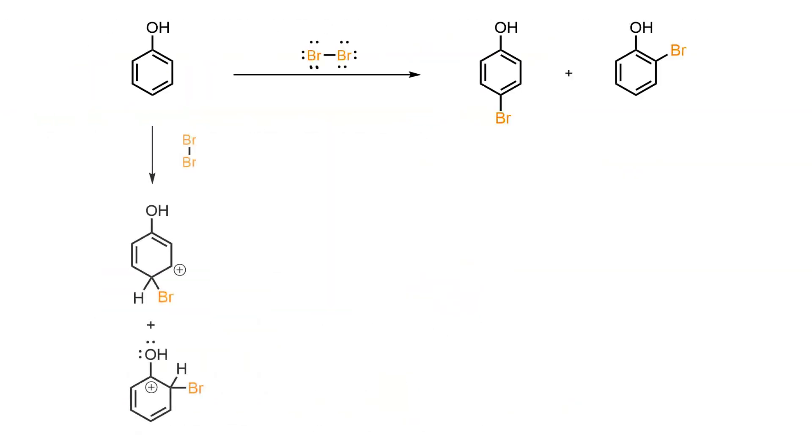Because the phenol is so activated, there is no need for a Lewis acid to activate the bromine electrophile. Nucleophilic attack on the bromine produces two isomeric carbocation sigma complexes with bromine attached at the ortho or para positions.